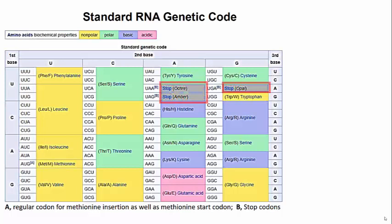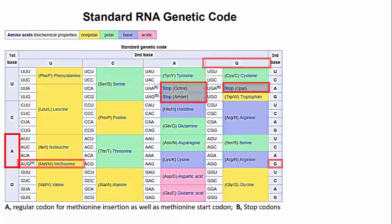I'll show you how you read this particular genetic code dictionary. Watch the order of nucleotides or bases lighting up here in the next click. First there's an A, then there's a U, and then to the right near the top there's a G. That AUG — first base is A, second is U, third is G — AUG is the code word for methionine.